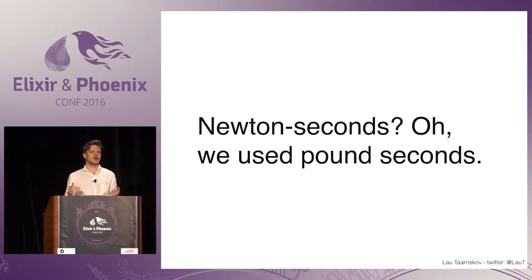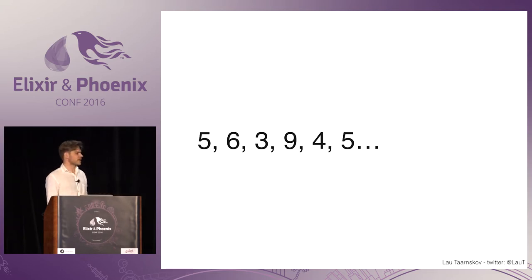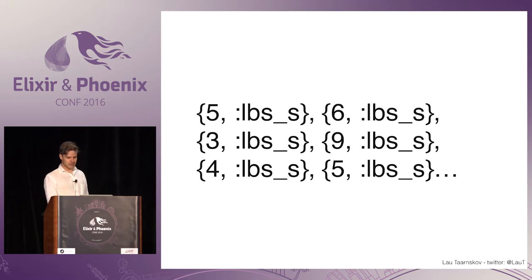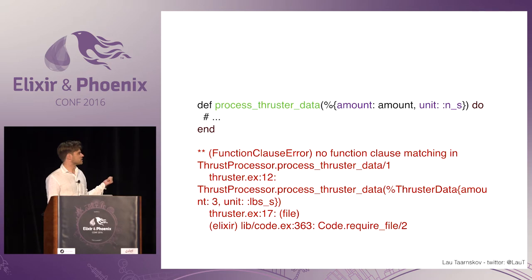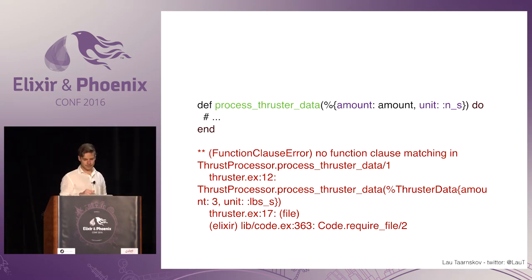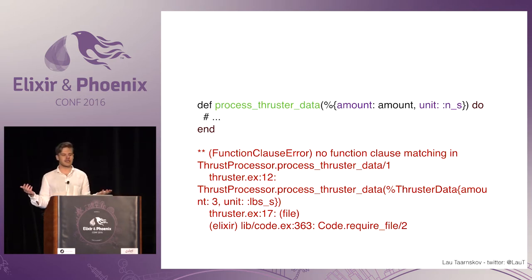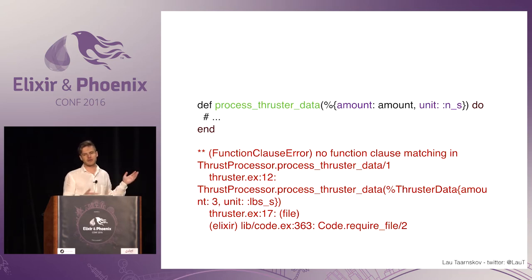Because if you just have numbers, at some point something might go wrong — you don't know what you end up with. Imagine if with the spacecraft example, they sent numbers and the unit, maybe as a tuple in Elixir or maybe as a struct. Then you could do pattern matching. If you required newton-seconds and they sent pound-seconds instead, you'd get an error. So imagine if they had been doing testing with just integers — it would all work, and they'd say this is ready to go to space. But if they used this instead, maybe they would have seen the error.